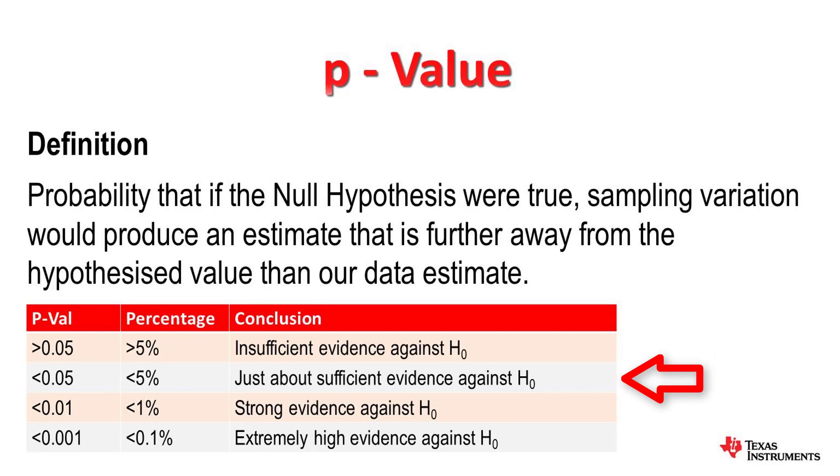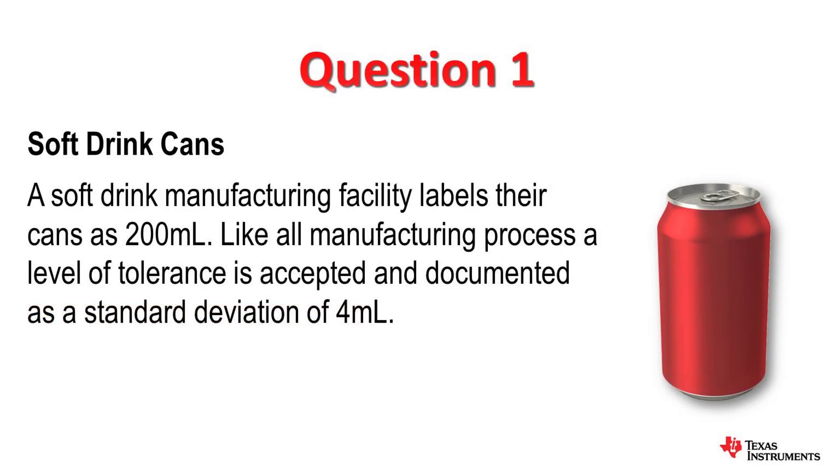Let's look at a question. A soft drink manufacturing facility labels the cans as 200mL. Like all manufacturing processes, a level of tolerance is accepted. In this case, it is documented to be a standard deviation of 4 milliliters.